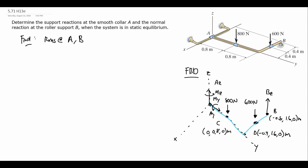Looking at our free body diagram as a quick check: our unknowns are BZ, AZ, AY, MZ, and MY — that is five unknowns. Typically for problems in this course we see six unknowns because we can get six equations out of each 3D rigid body free body diagram. Having five is a bit unusual, so it's a good habit to check that you haven't missed something. We'll see in a moment why five is correct and how the math works out.